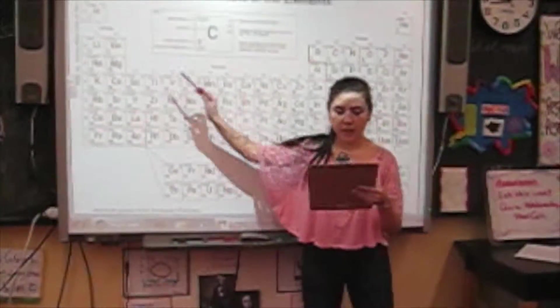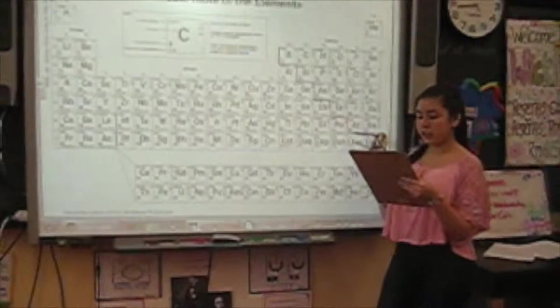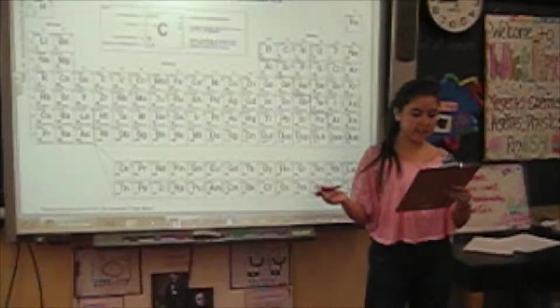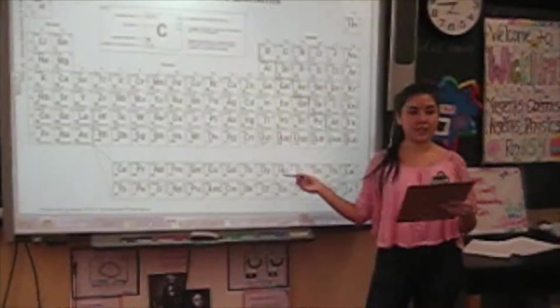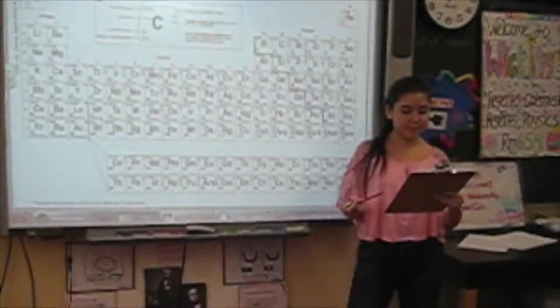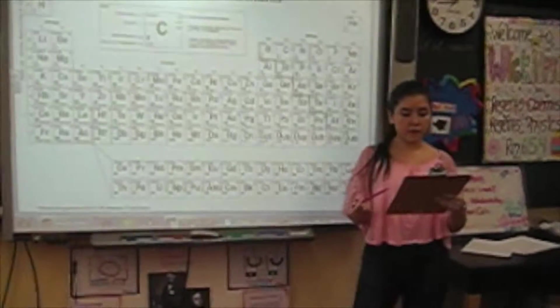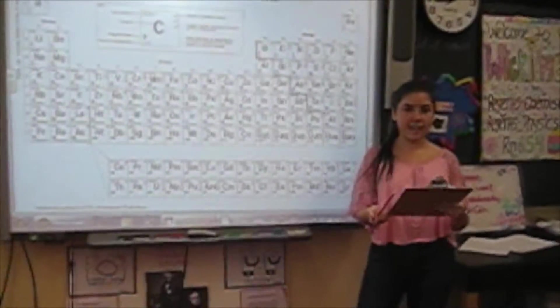Down a group, the electronegativity is increasing the atomic radius. Across the period, the electronegativity attraction is more because the atomic radius decreases. This is because the atomic radius affects the attraction between the protons and the electrons.